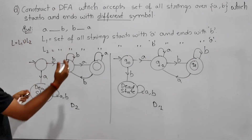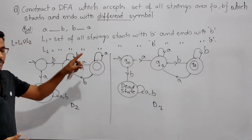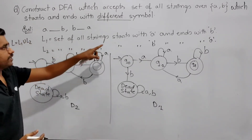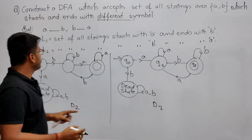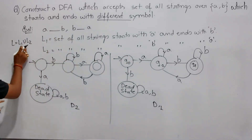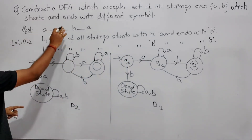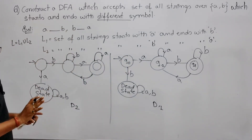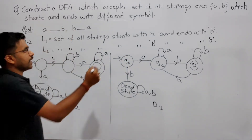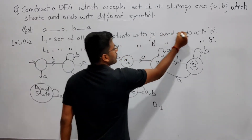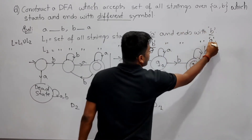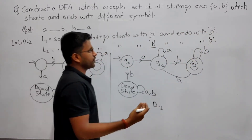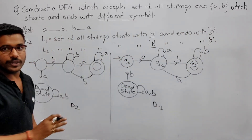If a string starts with a it should end with b, and if it starts with b it should end with a. There are no other options because sigma is {a, b}.